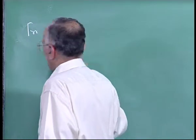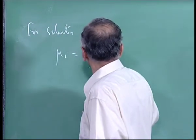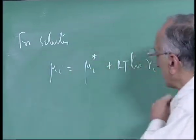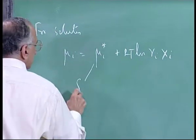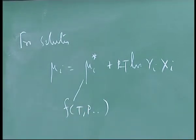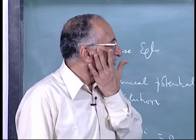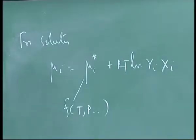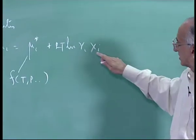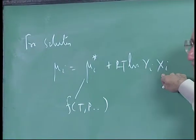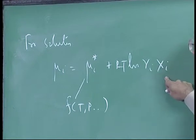For solutes we still write the same kind of model. The reference quantity μ_i* is a function of T and P alone — I will leave a double dot there and explain what I mean. It is not a function of composition, but it actually depends on the environment. The physically realizable state without change of phase is not X_i going to 1.